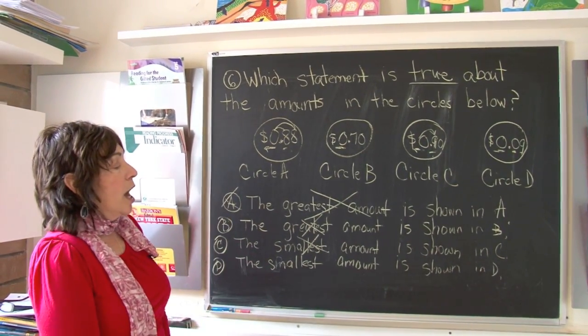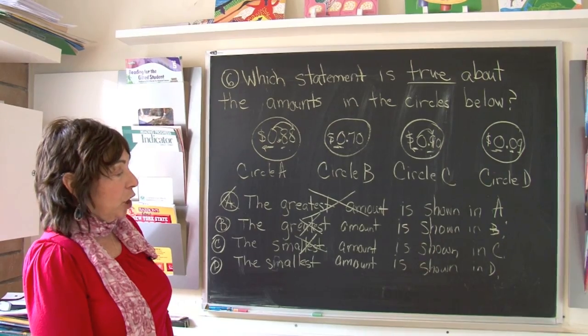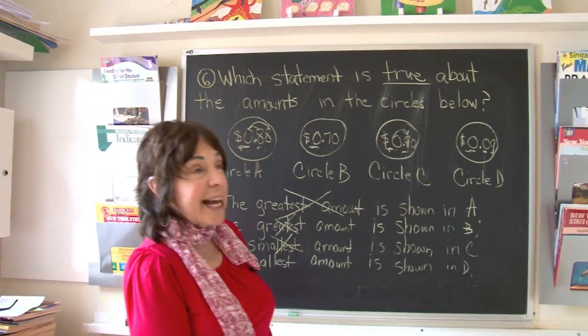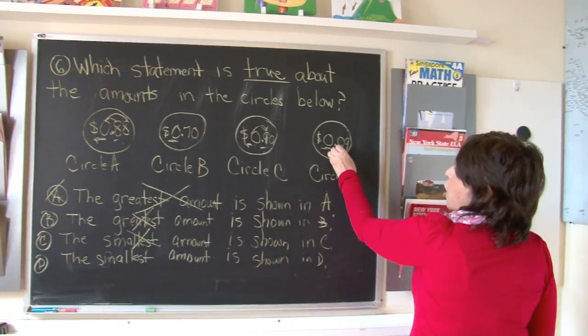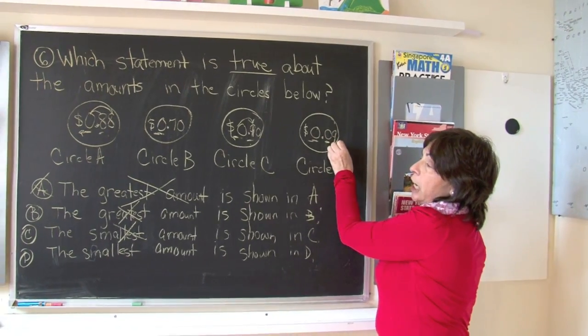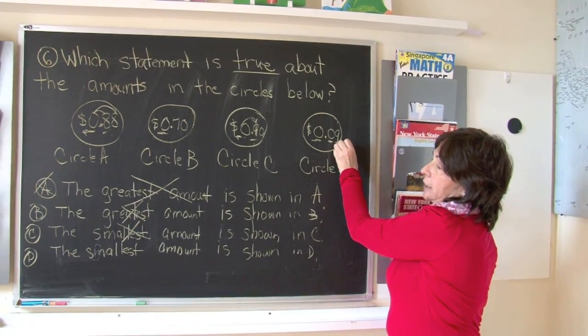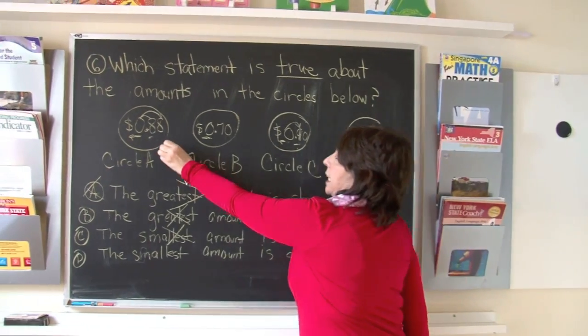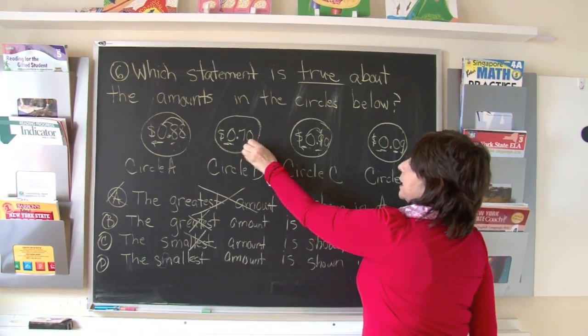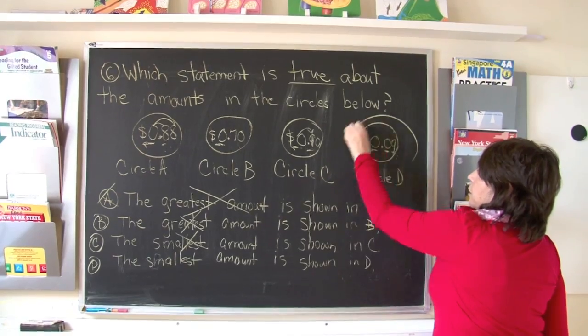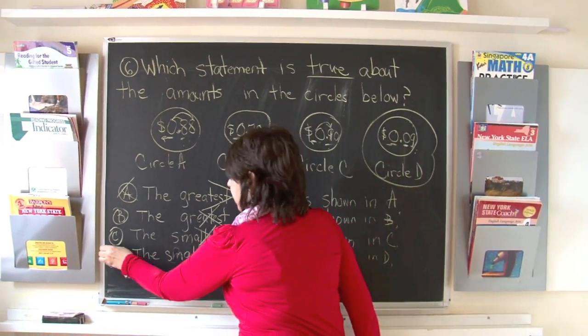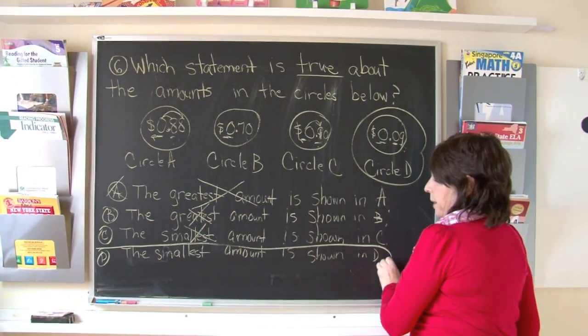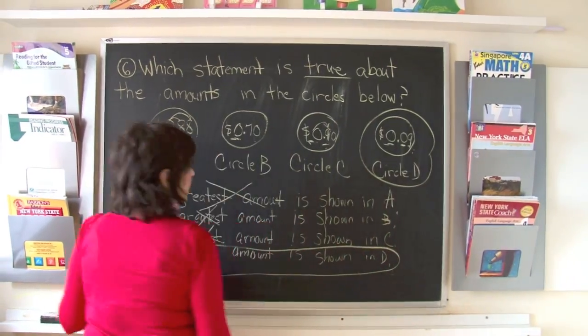Let's look at choice D. The smallest amount is shown in circle D. Yes, boys and girls, because there are no tenths. Only hundredths. Nine cents. Nine cents is certainly smaller than eighty-eight cents, seventy cents, or ninety cents. The correct answer is D. The smallest amount is shown in circle D.